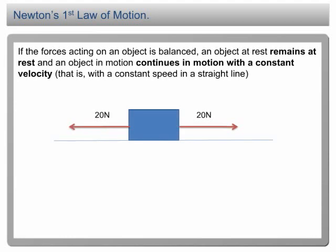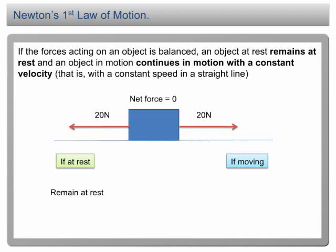For example, if there are two forces acting on a block, both of the same magnitude but in opposite directions, the net force is equal to zero or the two forces are in equilibrium. If the block is initially at rest, it will remain at rest. If it is initially moving, it will move with constant speed in a straight line.